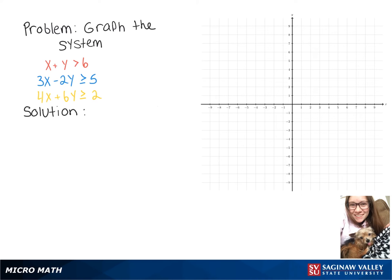We're going to graph the system of three inequalities, so we'll take it one at a time starting with the red one. We're going to subtract x over, giving us y is greater than 6 minus x.